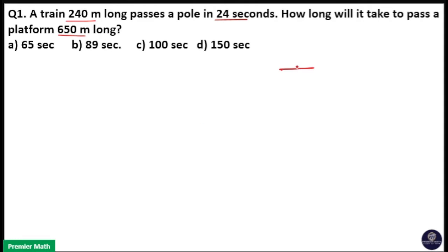Here a train of length 240 meters passes a pole in 24 seconds and the same train passes a platform of length 650 meters in how much time?